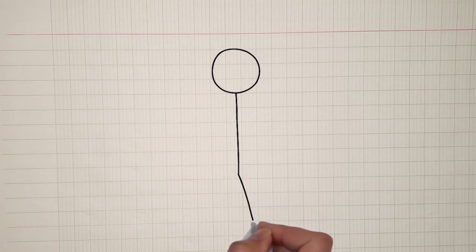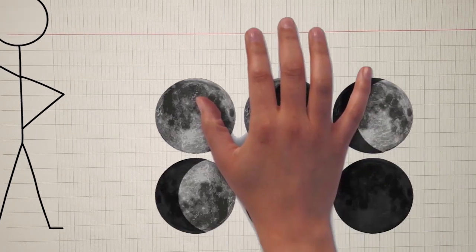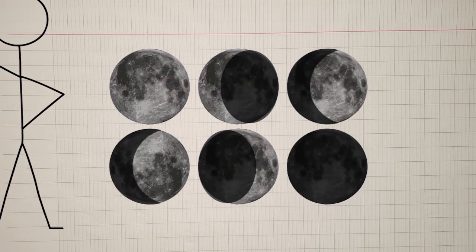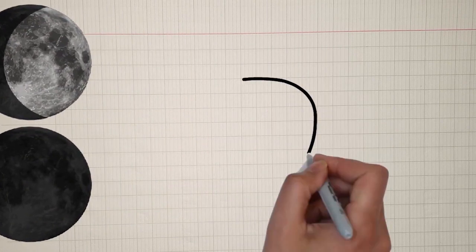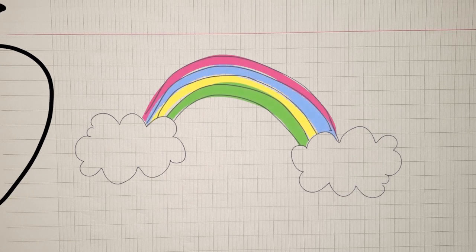Human beings have always been curious about the world around them. We were puzzled by the changing shapes of the moon. We have also questioned the fall of apple, and occasionally surprised by colorful rainbows in the sky.